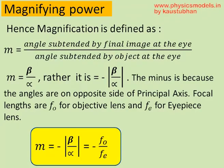Now, if you put the sign convention, the beta and alpha angles are on opposite sides of the white line, which is the principal axis. Therefore, M becomes equal to minus modulus of beta by alpha. And this is also equal to minus the focal length of the objective f_o divided by the focal length of the eyepiece f_e.